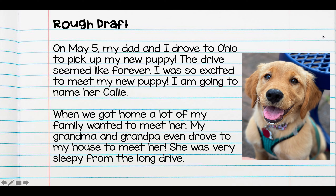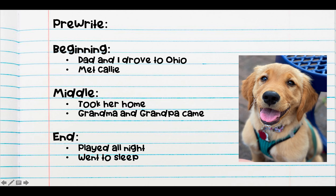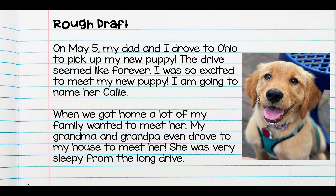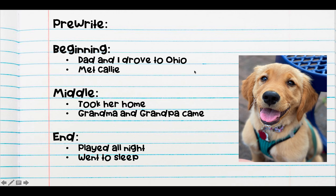Once you have your pre-writing done, and you have your beginning, your middle, and your end, you're going to start your rough draft. Now, my rough draft looks like it has a lot of words, but I've been working on this for a really long time. So don't think that you need to write this much the very first time you pick up your pencil. This could take you a couple of days. I'm going to read what I wrote. I wrote: on May 5th, my dad and I drove to Ohio to pick up my new puppy. And that's what I said I wanted to write at the beginning of my story. I talked about how I drove to Ohio, and I talked about how I met Callie, but there were some other details in there that I went ahead and added in a little bit later.